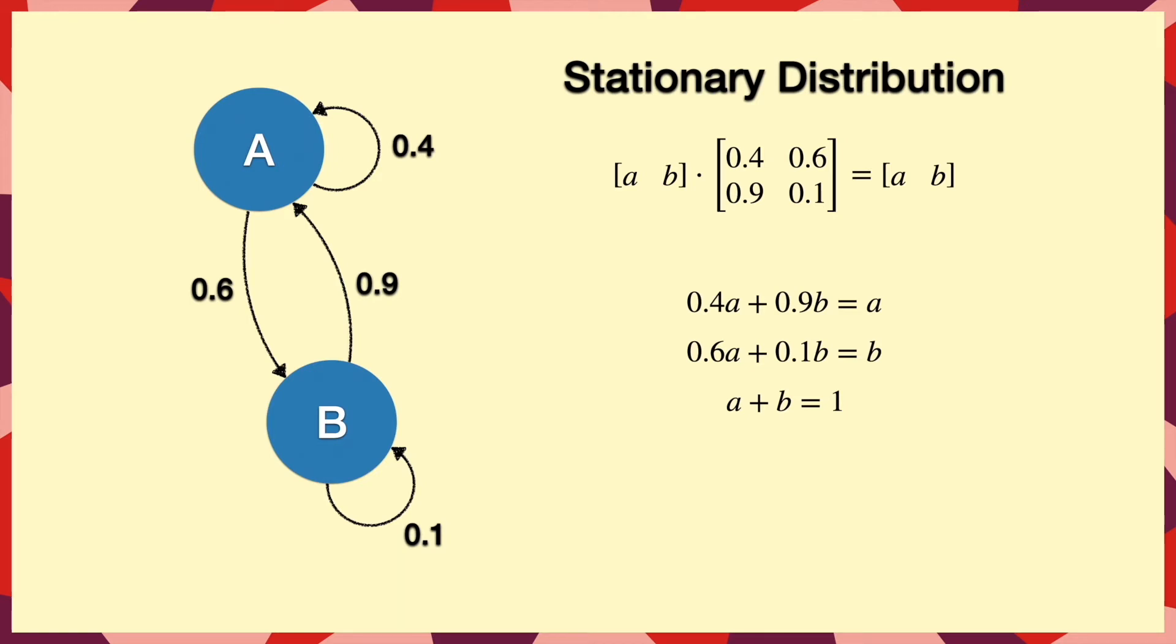We can then solve these, and we find that A is 0.6 and B equals 0.4, and this is our stationary distribution.